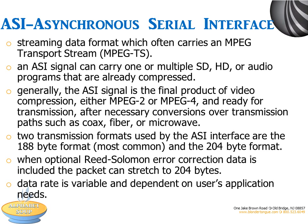ASI is an asynchronous serial interface defined by the DVB consortium. It is most commonly used to connect cable head-end equipment that transports either MPEG-2 or MPEG-4 transport streams, prior to distribution over RF or IP networks. However, the latest generation of head-end equipment is based on IP interfaces, so ASI is becoming less and less prevalent.